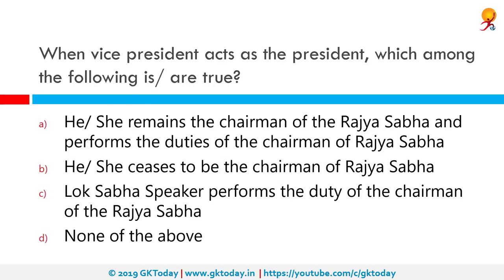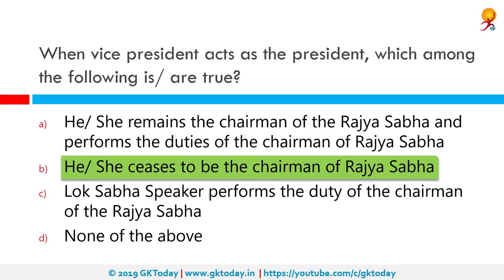The vice president acts as the president — which among the following is true? In a case when the vice president acts as president, he or she ceases to be chairman of the Rajya Sabha. Article 63 of the Indian constitution states that there shall be a vice president of India. The vice president acts as president in the absence of the president due to death, resignation, impeachment, or any other situation.